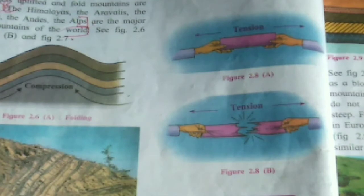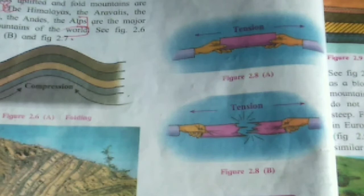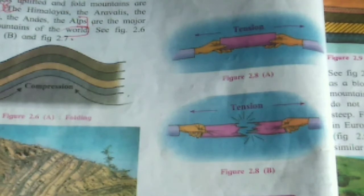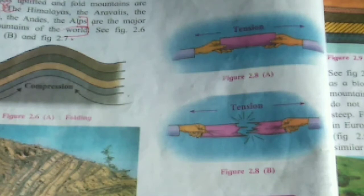In Activity 2, tension is created when you pull both ends away from each other. Similarly, when movements occur in opposite directions to each other, tension is generated and faults are formed in the earth's crust. That is why you can see folds, fold mountains and many different types of mountains formed because of the tension created in the interior of the earth.